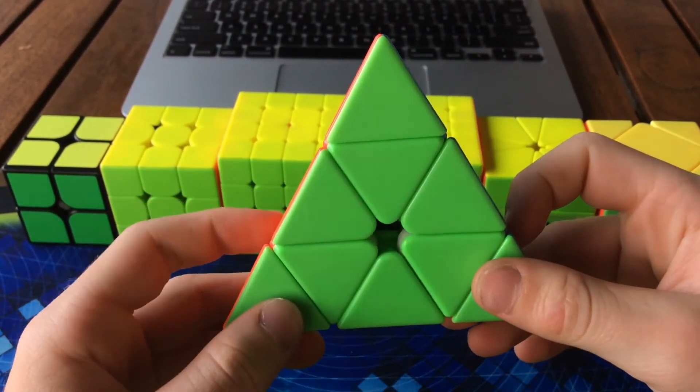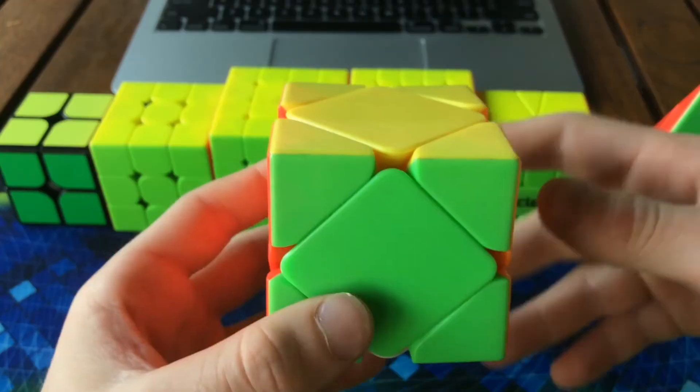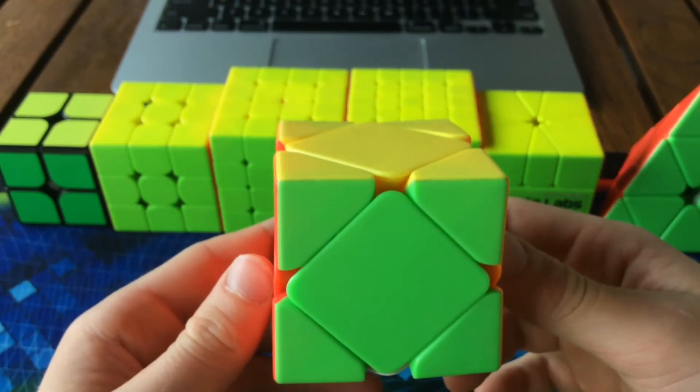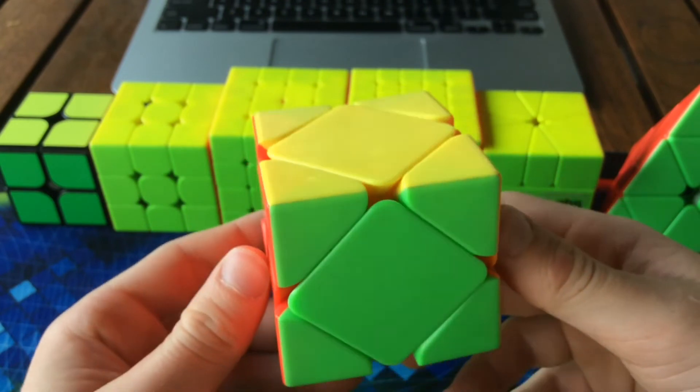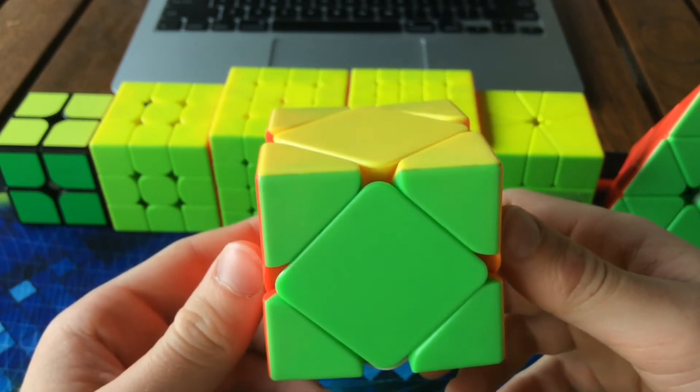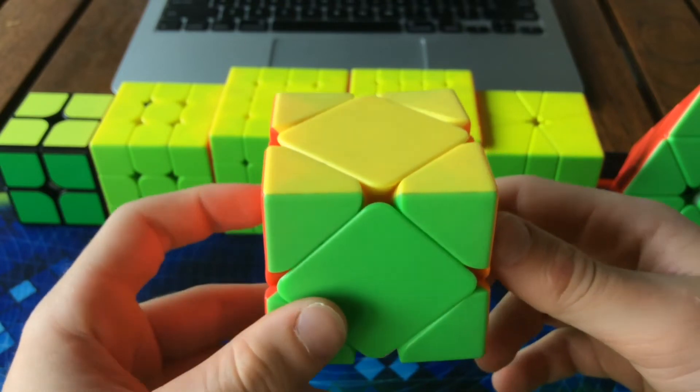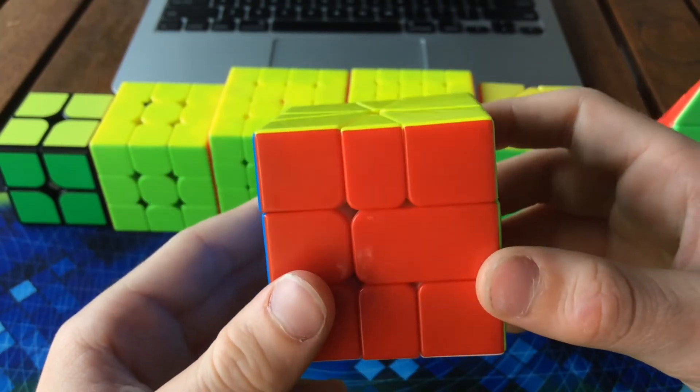Moving on to skewb, I'm using the Moyu magnetic. My goal is to just get a sub 11 average and a sub 9 single.